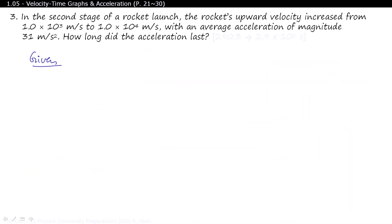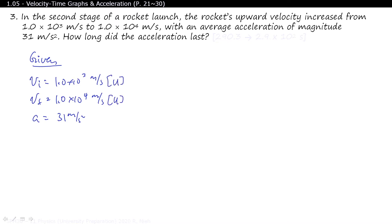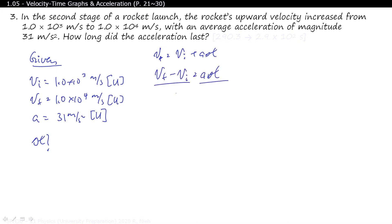We start with our givens: VI = 1.0 × 10³ m/s (1,000 m/s), VF = 1.0 × 10⁴ m/s (10,000 m/s), and acceleration = 31 m/s² upward, taking upwards as positive. We're looking for ΔT. Using VF = VI + AΔT, we bring VI over: VF − VI = AΔT, then divide both sides by A to isolate for time: ΔT = (VF − VI) / A.